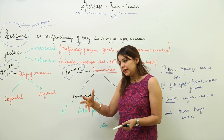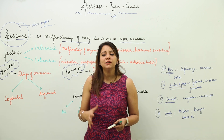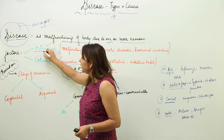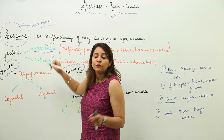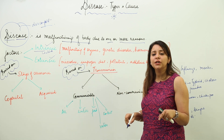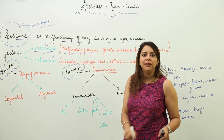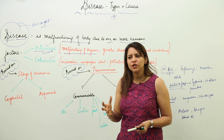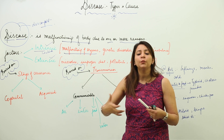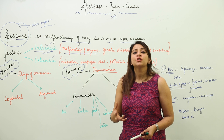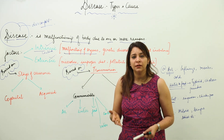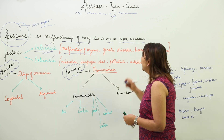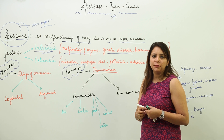There are certain factors that can lead to disease. There can be an intrinsic factor — that is, an internal factor that lies within the body. One intrinsic factor is the malfunctioning of organs. Since all body organs are interconnected, if one organ is not working properly, the person cannot remain fit. So malfunctioning of organs can be an intrinsic factor behind disease.